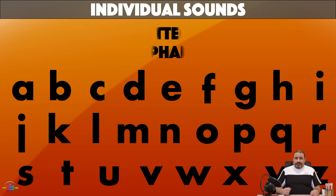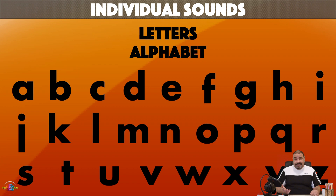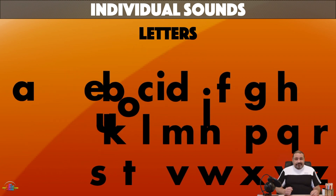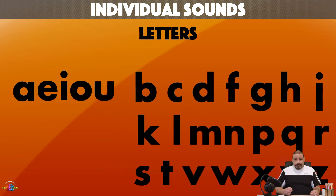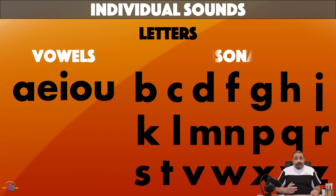These are the letters of the alphabet in English — A, B, C, D, E, F, G and so on. Now, these letters can be divided into two groups: vowels and consonants.